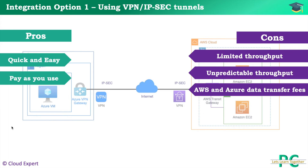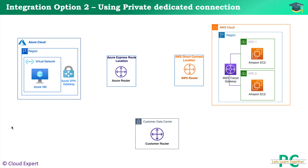Now let's look at the options if you want to overcome these cons — if you want predictable throughput or more bandwidth. In this diagram, we will talk about integration option 2, which involves a private dedicated connection between your datacenter and the two cloud providers.